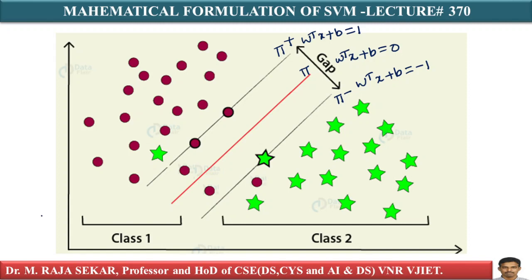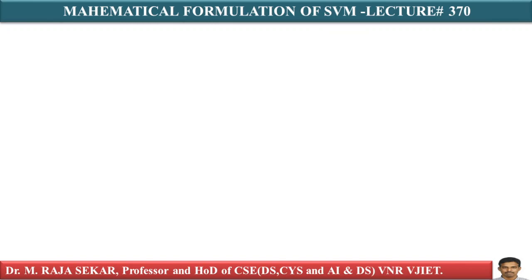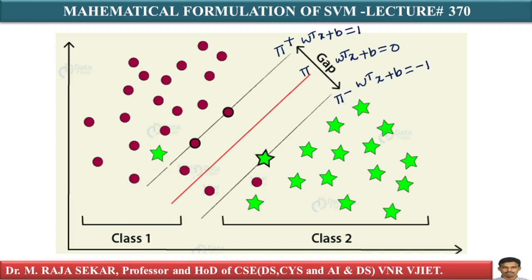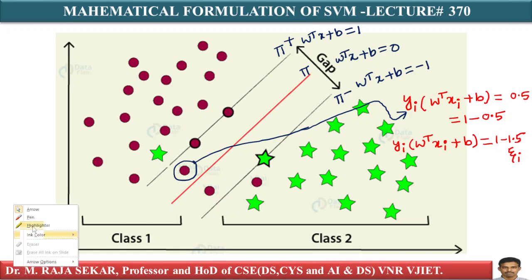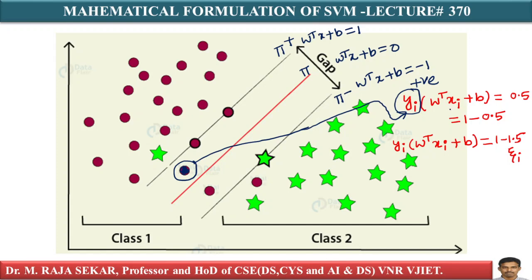Let us take each of these points. Consider this particular point — we are assuming this point is halfway between π plus and π. For this point, what is your yi? Positive. So yi into W transpose Xi plus B — we already know its label is positive — and yi into W transpose Xi plus B is nothing but 0.5.